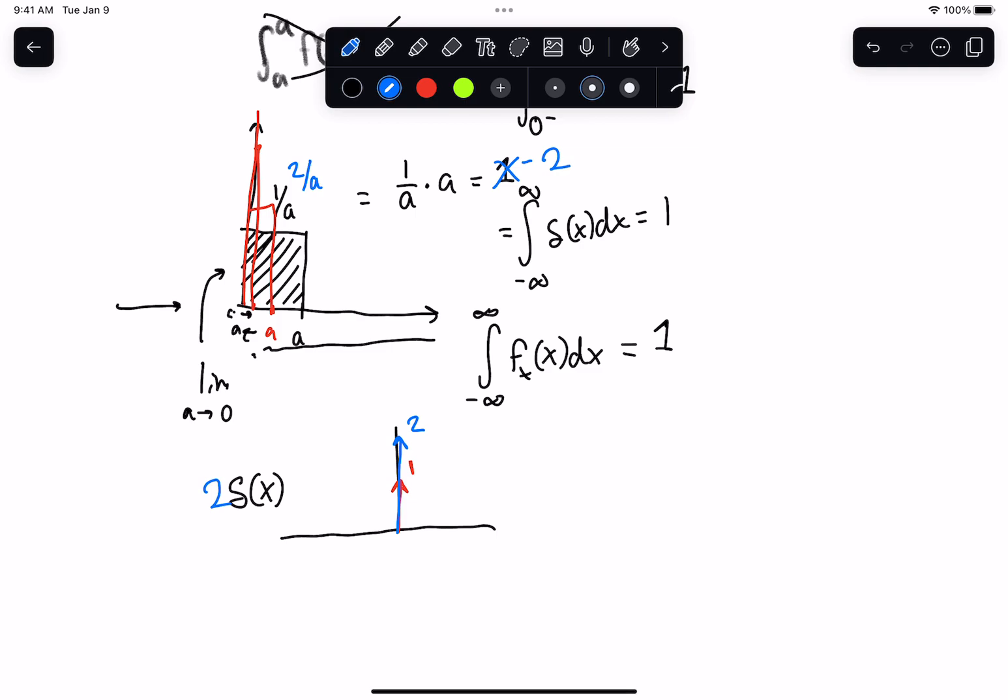So you can scale these by any sort of scalar, and that just pops out of the integral. So now the integral of any particular number, let's say a times delta of x, is 1 times a. The a just pops out because the integral is linear.